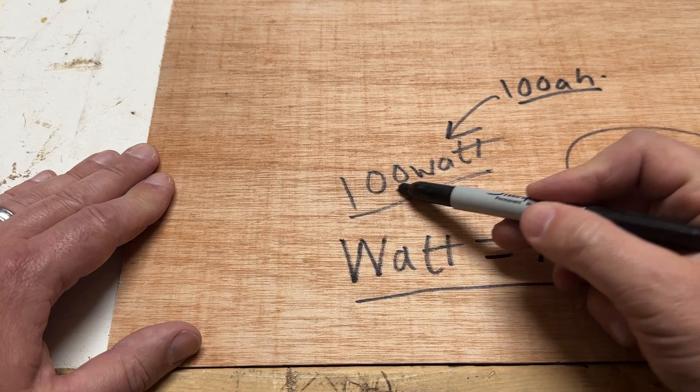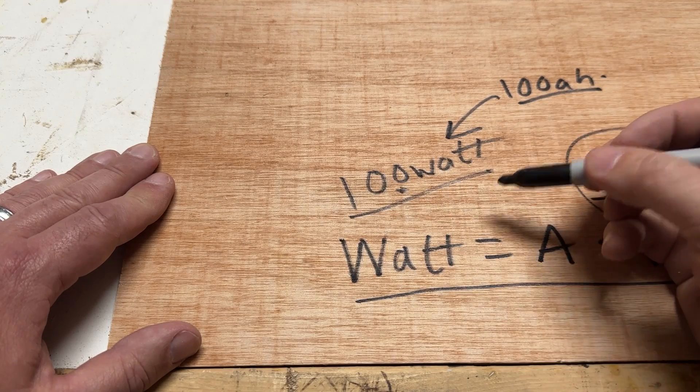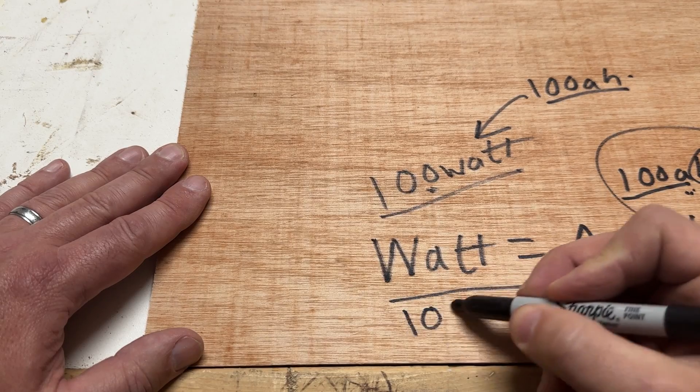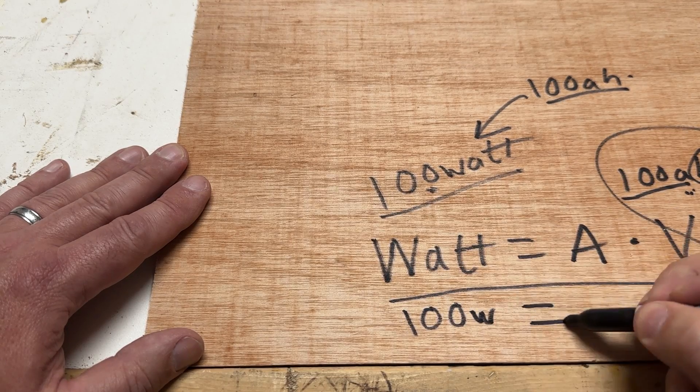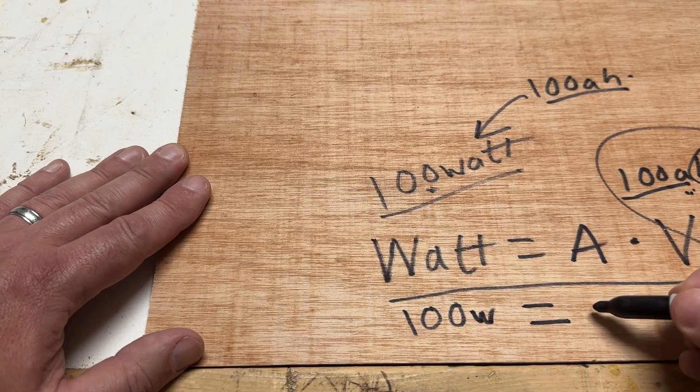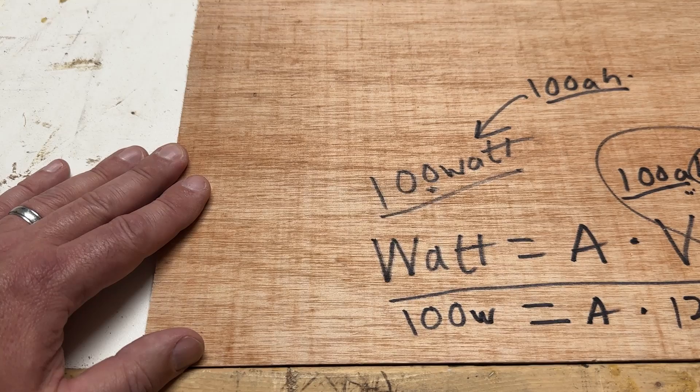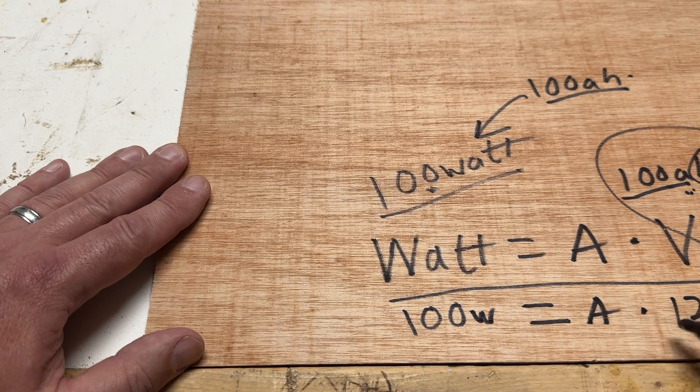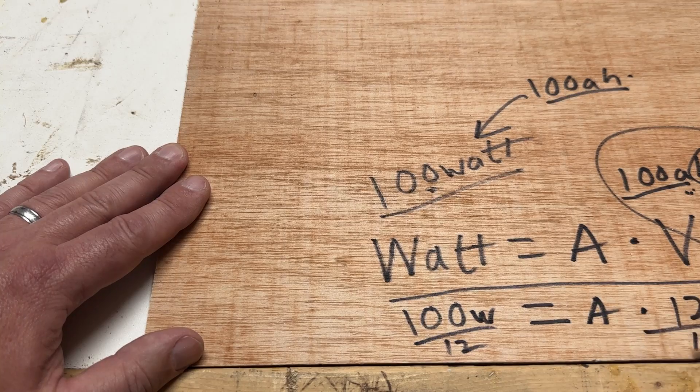And we want to run this light bulb. We want to know how long can our 100-amp-hour battery run this light bulb? So what we need to figure out is, using this formula, how many amps are we pulling at 12 volts? That's our battery power. So if we have 100 watts, that's plugged into the formula here, equals—we don't know the number of amps. That's what we're trying to solve for. But we do know the number of volts, which is 12. So if we solve for A, we divide by 12.